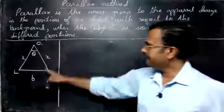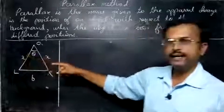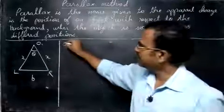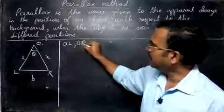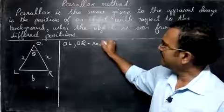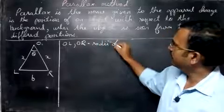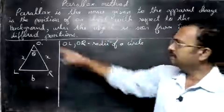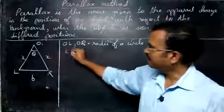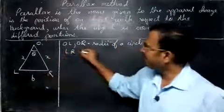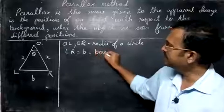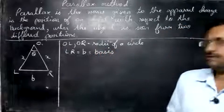Now you see, in this case, O, L and O, R, they are considered to be the radius of a circle. I will write this down. OL and OR are considered to be the radii of the circle. The whole thing will say the sector. Then L, R. This distance is L, R. That is equal to, we say B. B means what it is called as a basis. B-A-S-I-S. Basis.